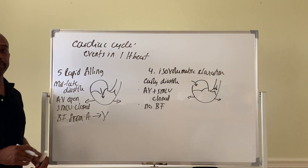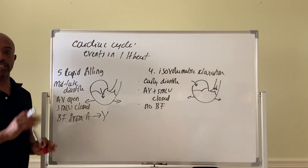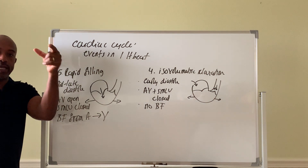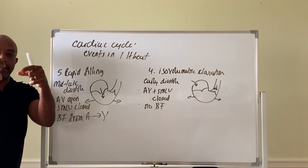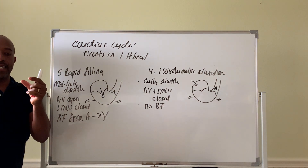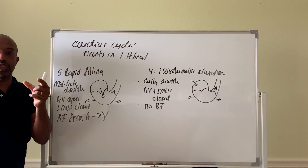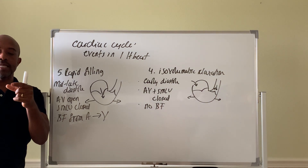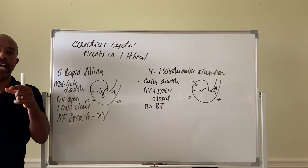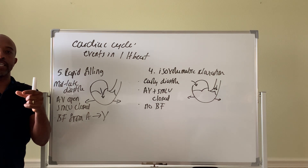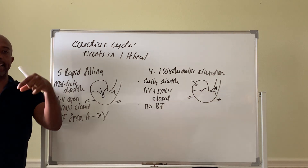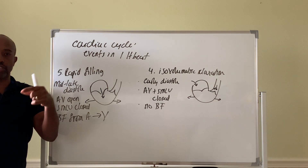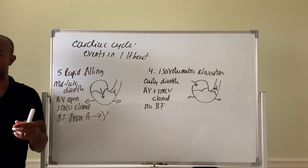So that's the cardiac cycle in summary. First, the atria squeeze and push blood down. Then the ventricles squeeze — that's systole — to push blood out. Then they relax — that's diastole — to get blood back in. And then the atria squeeze again and start all over again.